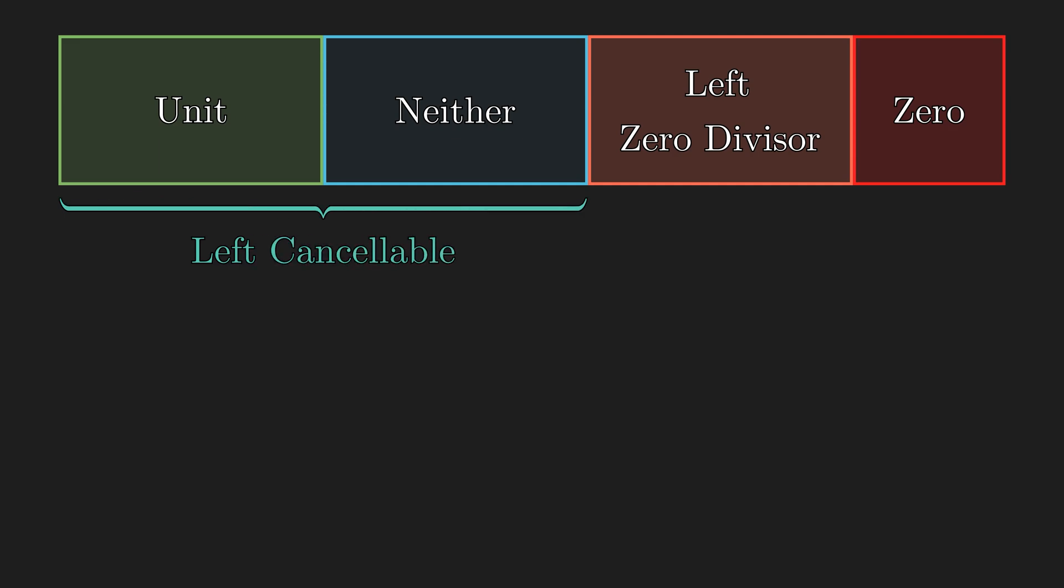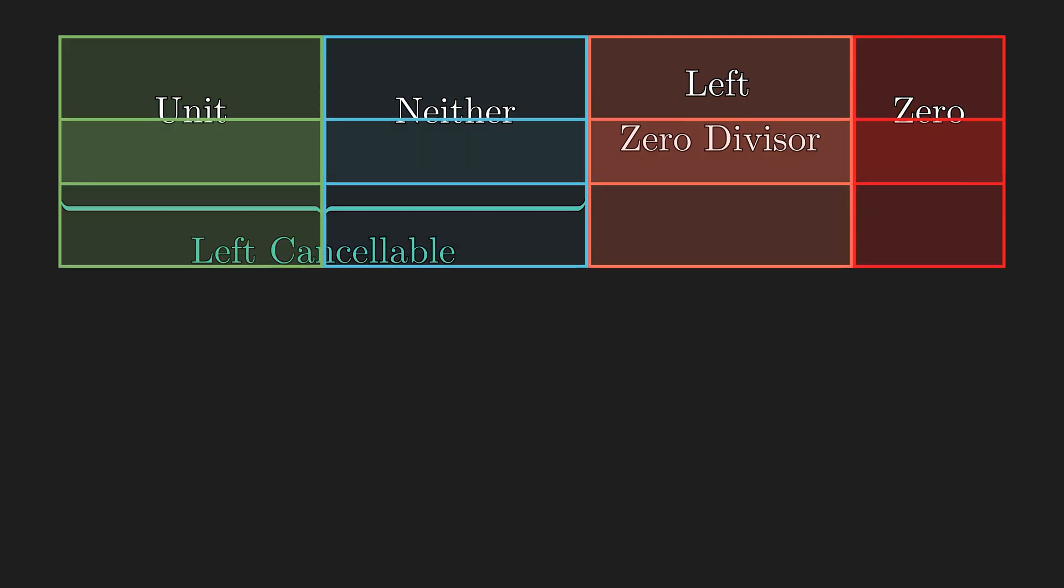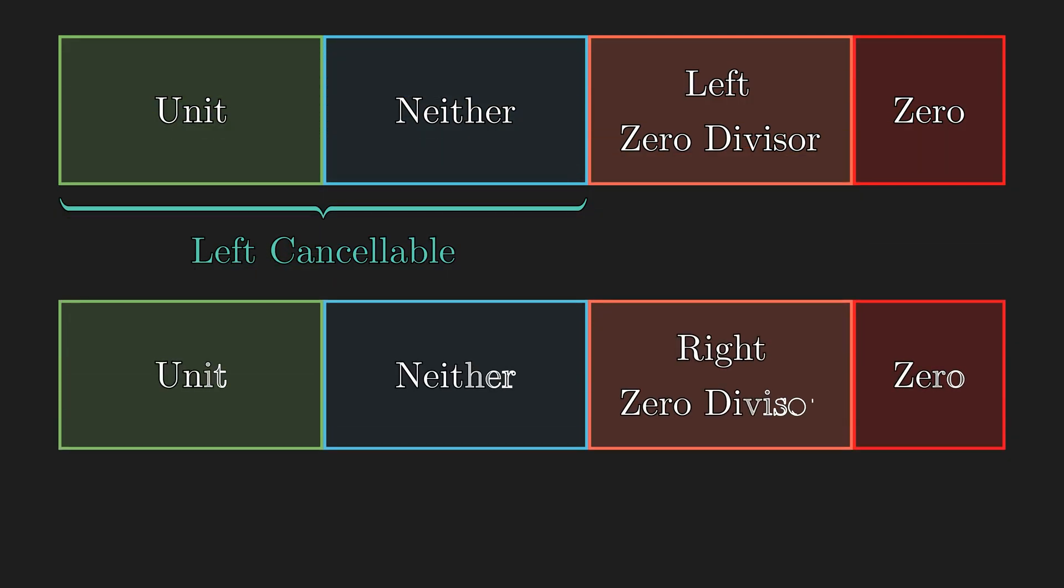And that is left cancelable. Or some mathematicians call it left regular. And similarly, we call elements that are neither zero nor a right zero divisor a right regular or right cancelable. In short, it is the zero divisors in the ring that make the multiplication and the division really funky. And if we don't have them, then every element in the ring becomes cancelable.